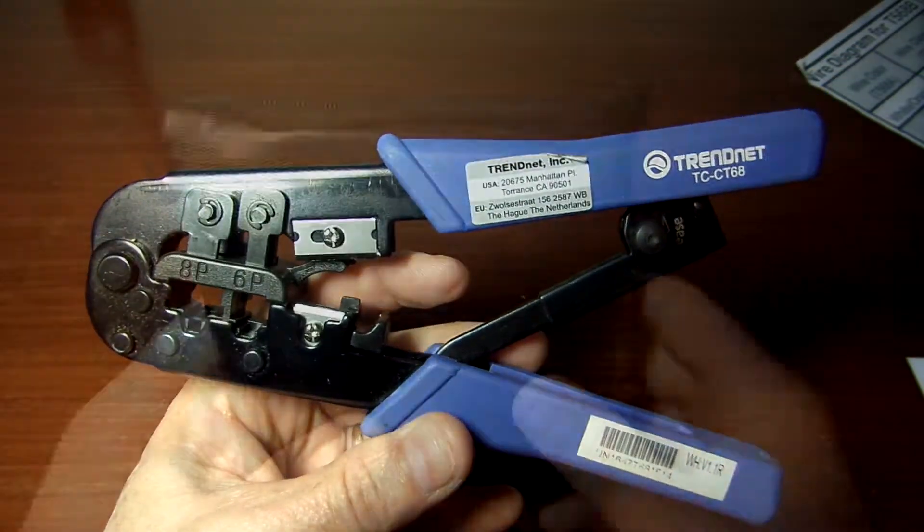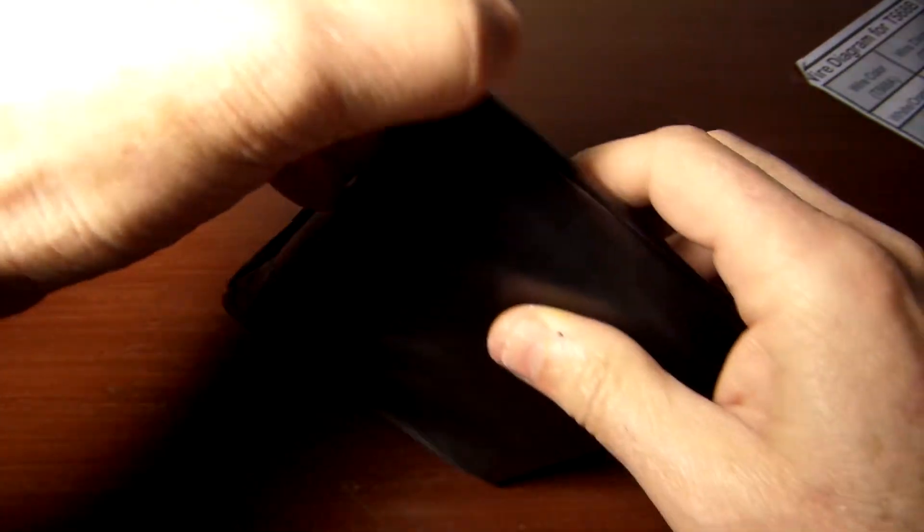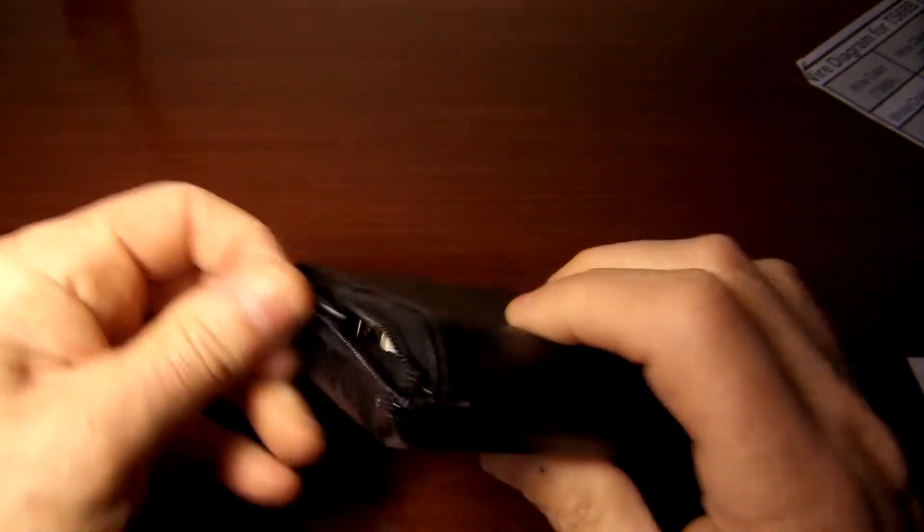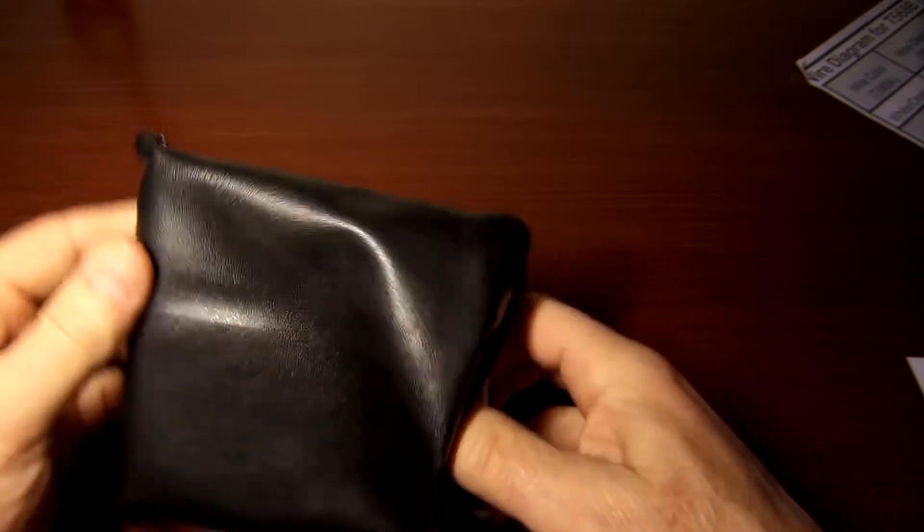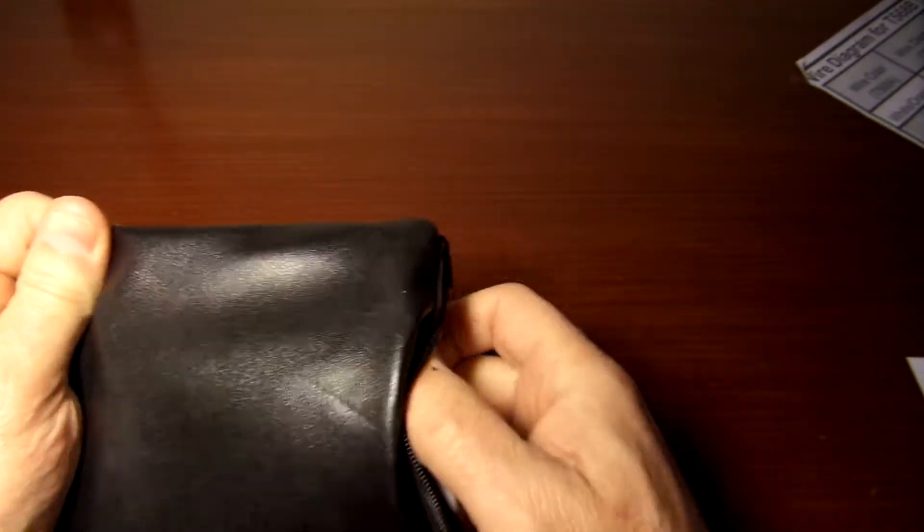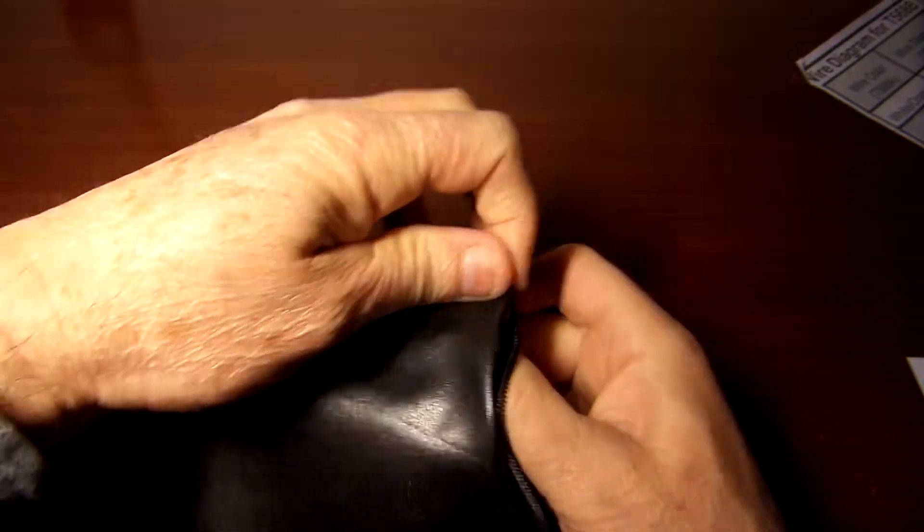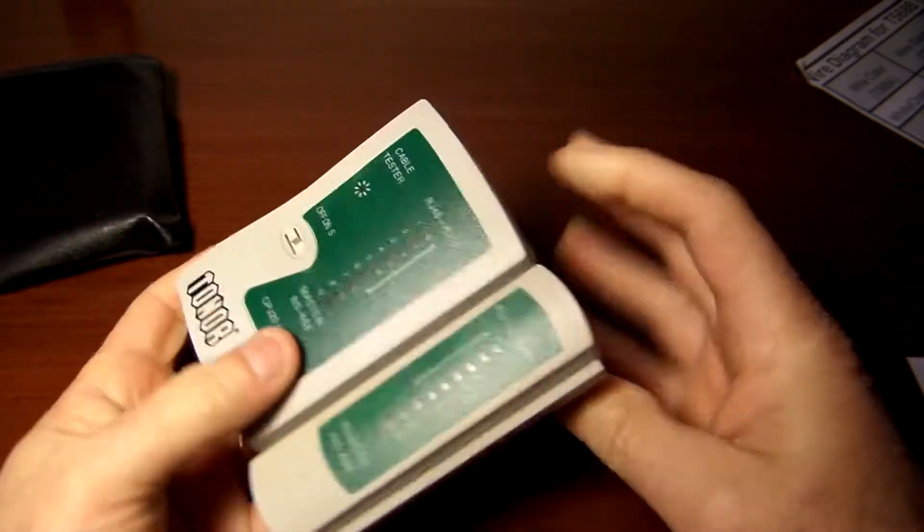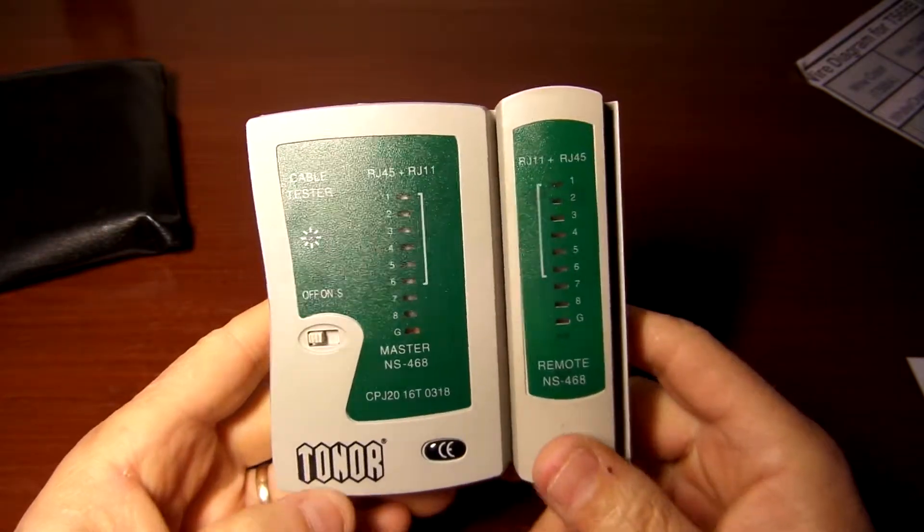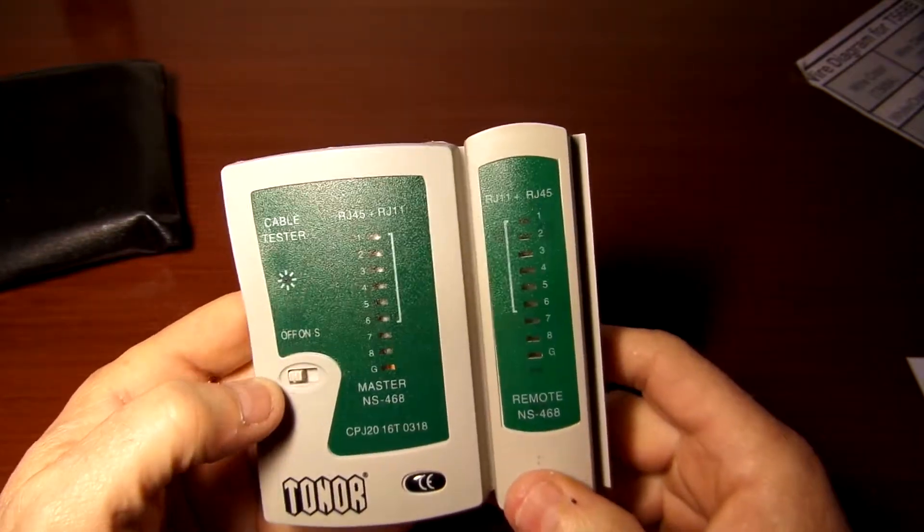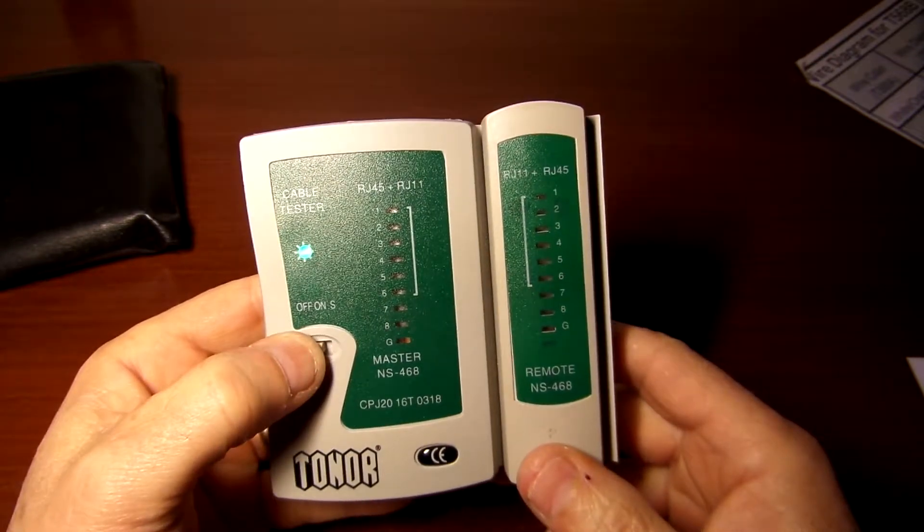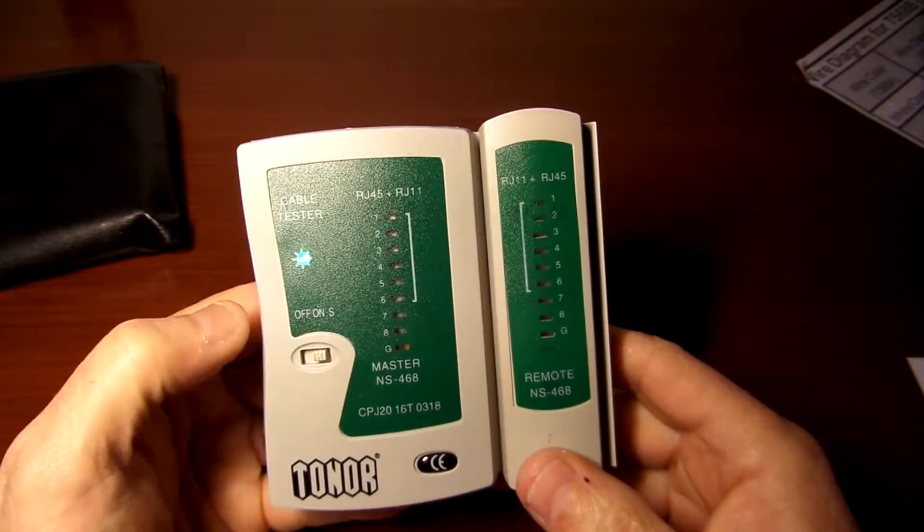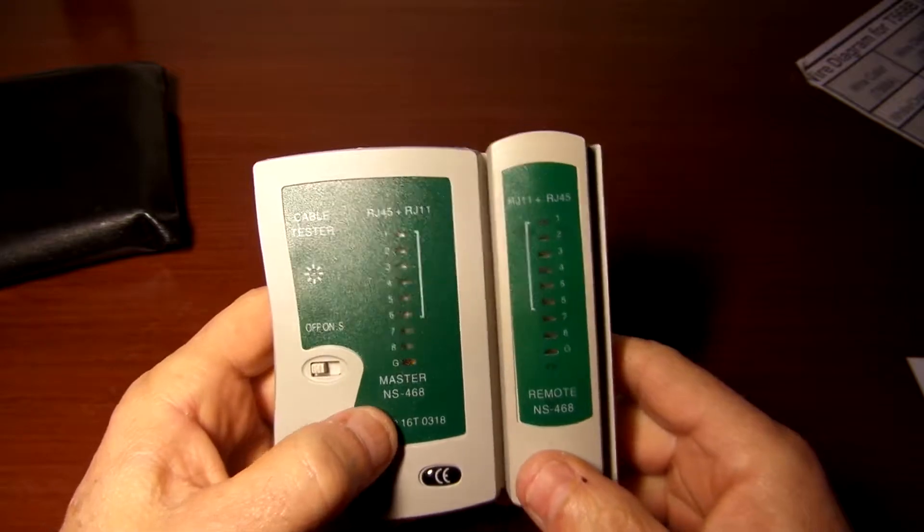I highly recommend that you have some sort of a tester. This is a Tonor network LAN cable tester. It comes with a battery, it comes with two modes, and I'll show you a bit how it works.